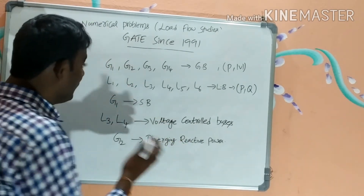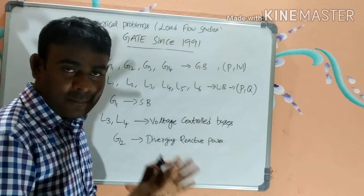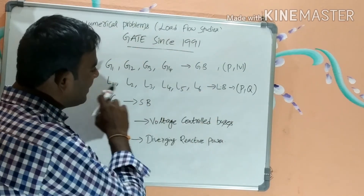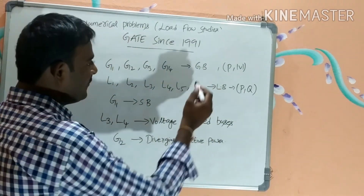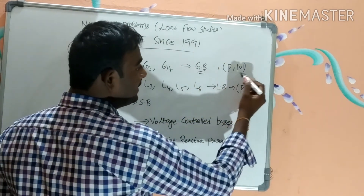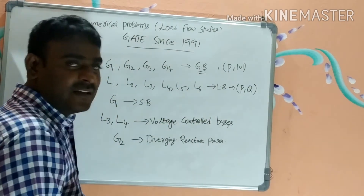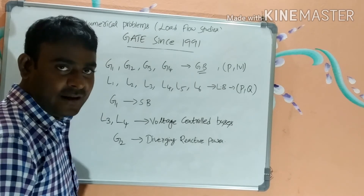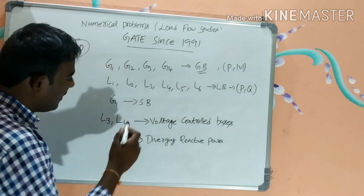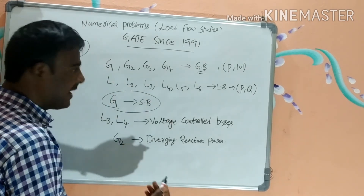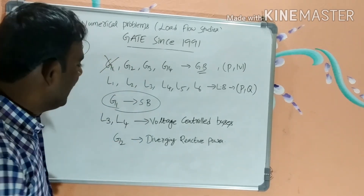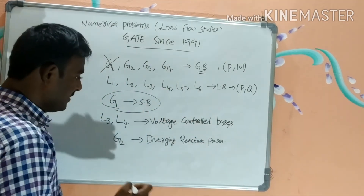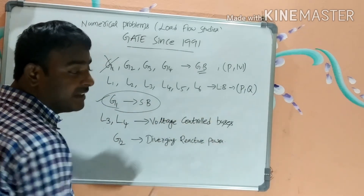Out of 10 buses, 4 are generator buses and 6 are load buses. Generator G1 is considered the slack bus and is excluded from load flow equations, leaving 3 generator (PV) buses and 6 load (PQ) buses. Additionally, L3 and L4 are voltage-controlled buses.